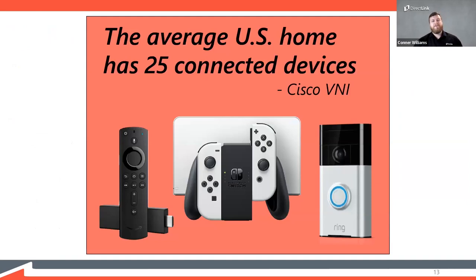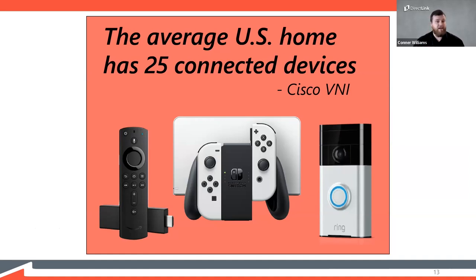The average home in the United States now has an average of 25 devices connected to their home network at one time. All of those devices compete for bandwidth — they compete for the speed coming into your home. If there isn't enough to go around, that's where you'll start to see interruptions or that frustrating buffering wheel. I did this exercise myself and underestimated — there are two of us in my home and we have about 23 connected devices, including a printer, computers, and Google Home smart speakers I almost forgot about.